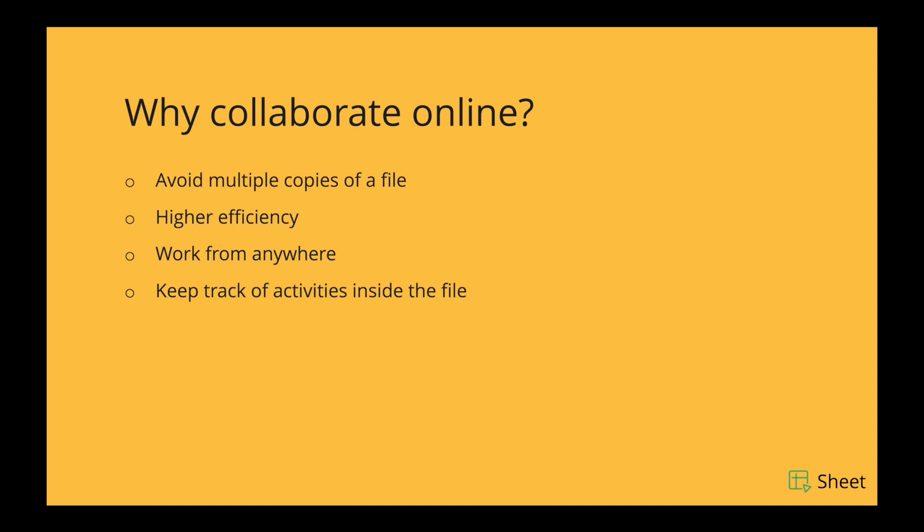Collaborating online in real-time has many advantages. First, when you work offline you'll be creating multiple copies of the same file, causing a lot of confusion. But when you collaborate with your team online you can avoid multiple copies and thus avoid confusion. Also, when your team collaborates simultaneously you save a lot of time and your team's efficiency increases. Another major advantage is that you can work from anywhere — this does not require a physical office environment. And finally you can keep track of what exactly happens inside your file, thus having control over your data.